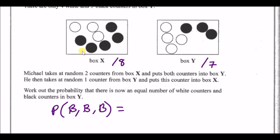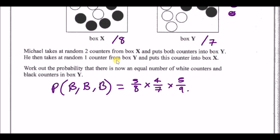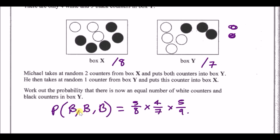With two blacks added, box Y has five blacks and four whites. The chance of picking a black to put back is 5/9. We need to find every valid combination, work out each probability, and then add them all up.